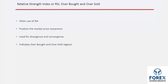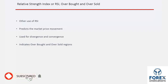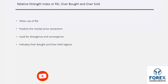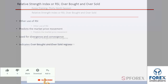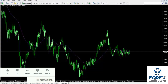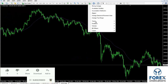RSI can be applied for the following purposes: first, to predict the reverse point of trends beforehand; second, to specify divergence and convergence; third, to indicate overbought and oversold regions. Patterns can also be applied on oscillator trends.